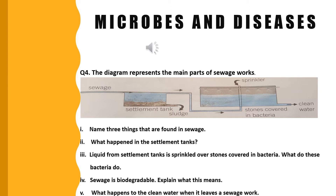The next question is: What happens in the settlement tanks? The solid particles – which include industrial waste, feces, etc. – sink to the bottom of the settling tank to form sludge. This sludge is later removed and used to make fertilizers. You can add more examples to make your answer more attractive.